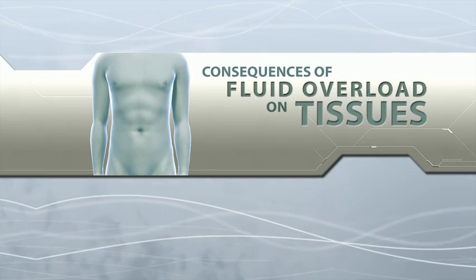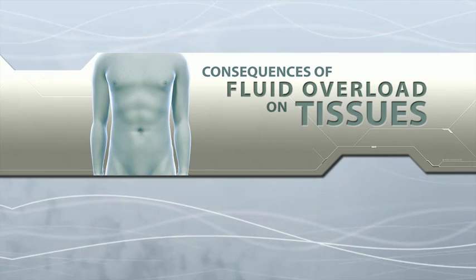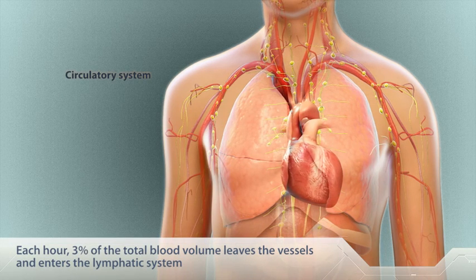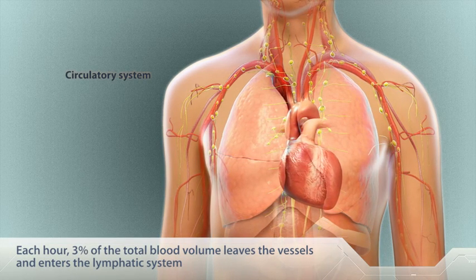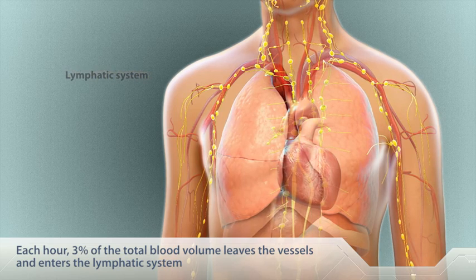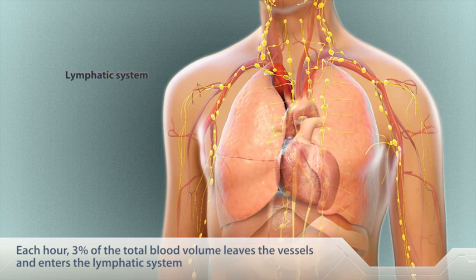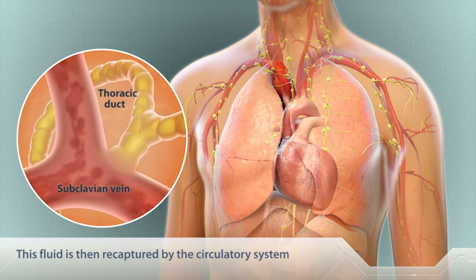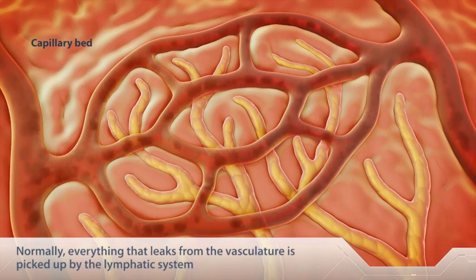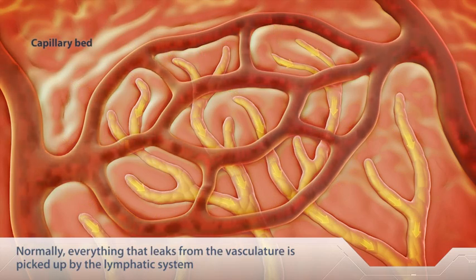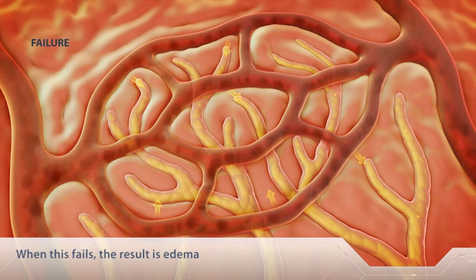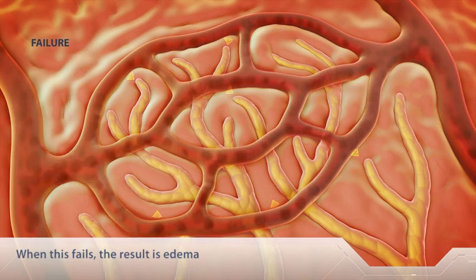Consequences of fluid overload on tissues. Each hour, 3% of the total blood volume leaves the vessels and enters the lymphatic system. This fluid is then recaptured by the circulatory system. Under normal conditions, everything that leaks from the vasculature is picked up by the lymphatic system. However, when this fails, the result is edema.